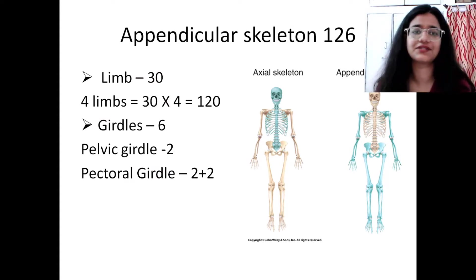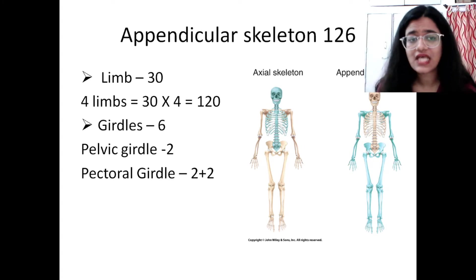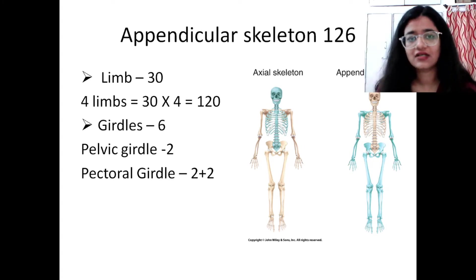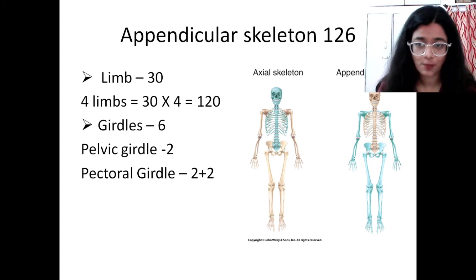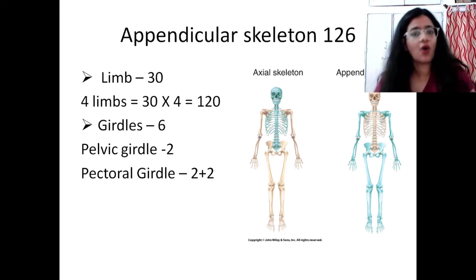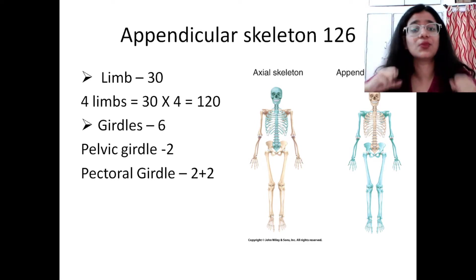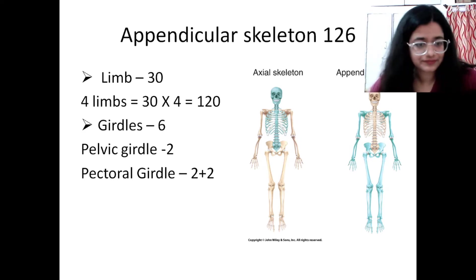The appendicular skeleton has 126 bones. Each of the four limbs has 30 bones, so 30 times 4 equals 120, and the girdles contribute 6 — pelvic girdle 2, and pectoral girdle 2 plus 2. All of this we are going to see in the 3D structure.